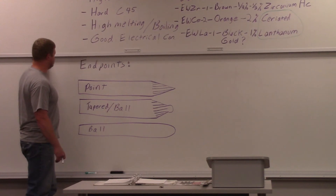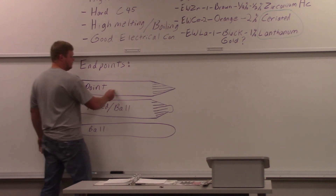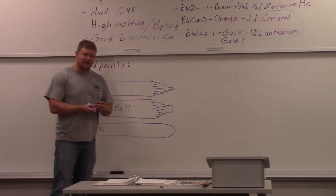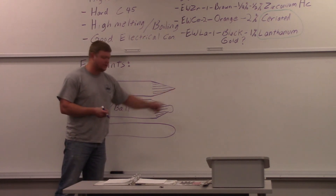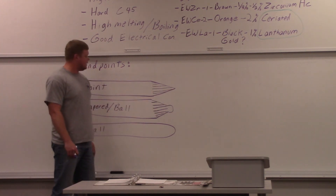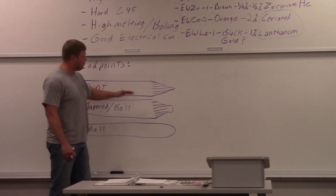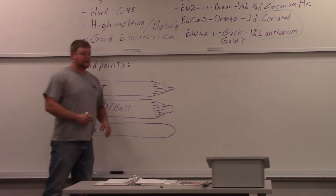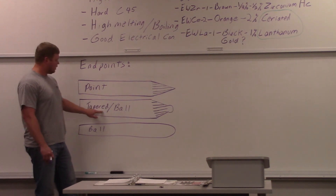For steel and stainless, you're going to use a point 99.9% of the time. You just grind it to a point and put a little flat spot on the end. You can see grinding marks on this tungsten — you always want your grinding marks going parallel with the tungsten, not perpendicular across it.